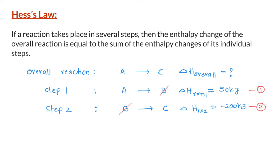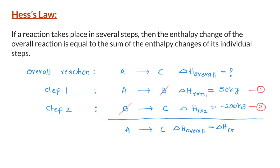Since the product of the first reaction is the reactant of the second reaction, when you add these two reactions, we can cancel them out. So the overall reaction when you add these two steps is A gives C — this is the reaction we wanted in the first place. Since we added reaction 1 and 2 to get the desired reaction, we can add the delta H values: 50 kilojoules plus minus 200 kilojoules. If you do the math, delta H overall equals minus 150 kilojoules.